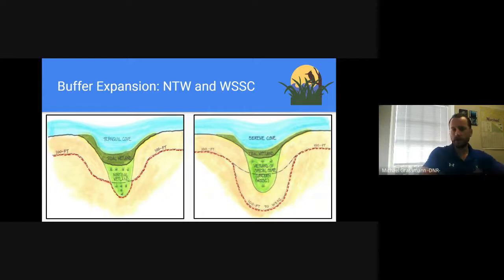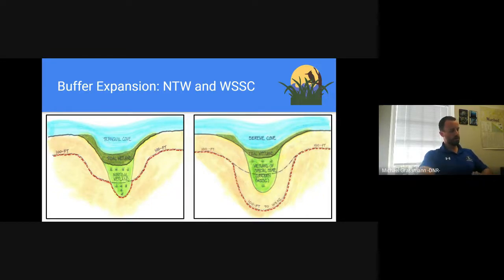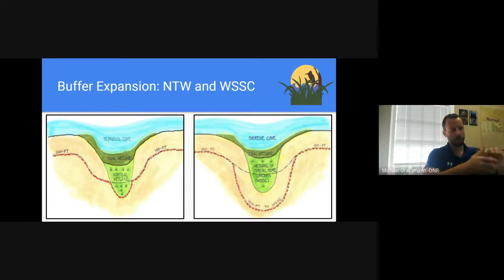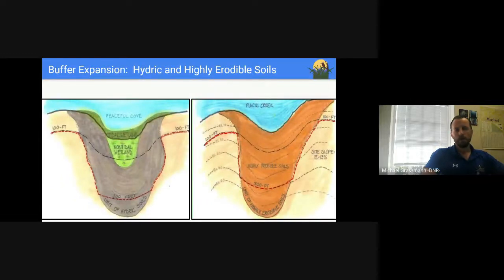For non-tidal wetlands, the buffer is expanded to incorporate the non-tidal wetland, so that 100-foot buffer gets bumped out to include it. MDE also has non-tidal wetland buffers that may push it out further, but that's beyond critical area regulations. For a wetland of special state concern, the buffer is bumped out an additional 100 feet beyond the edge of the wetland. If you see a site plan with any of these features, please reach out early so we can coordinate and ensure the buffer is correctly delineated.